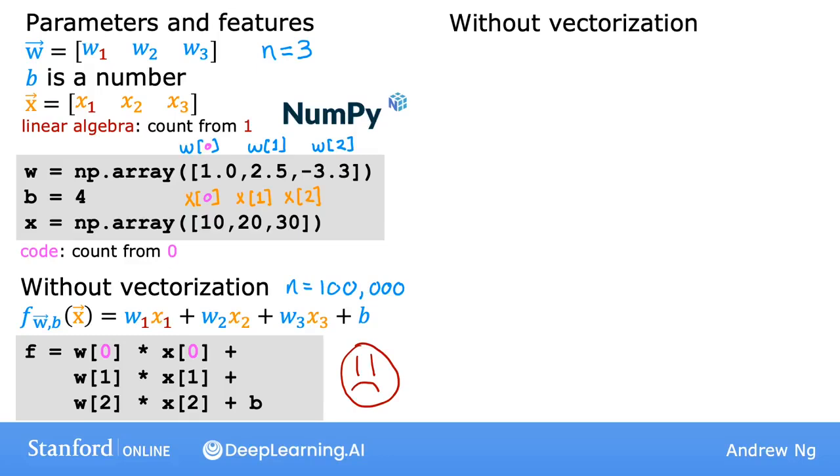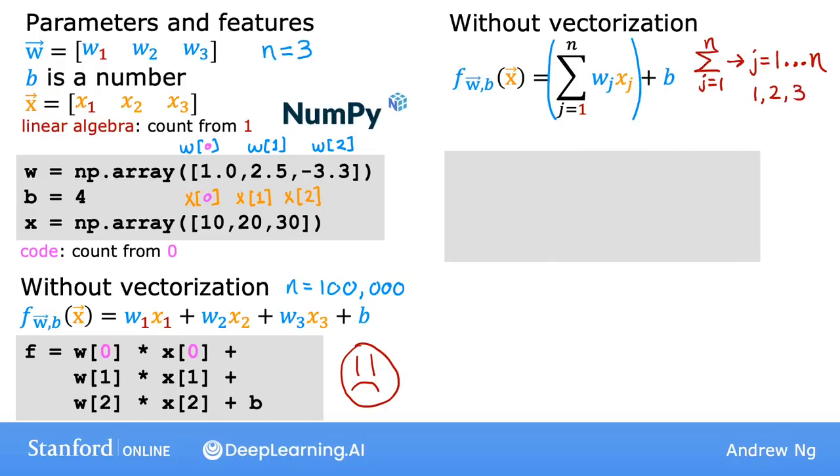Here's another way, still without using vectorization but using a for loop. In math, you can use a summation operator to add all the products of wⱼ and xⱼ for j equals 1 through n, then outside the summation you add b at the end. So the summation goes from j equals 1 up to and including n. For n equals 3, j therefore goes from 1, 2, to 3. In code, you can initialize f to zero, then for j in range from 0 to n—this actually makes j go from 0 to n-1, so from 0, 1, to 2—you can then add to f the product of w[j] times x[j].